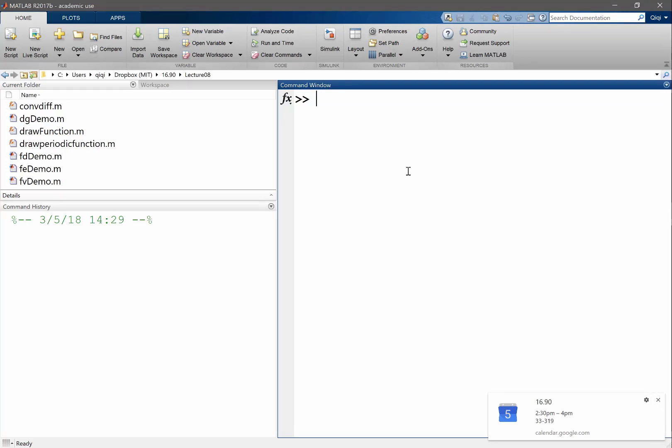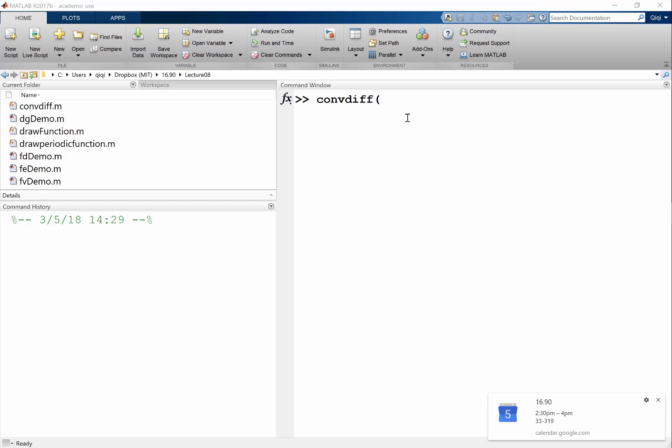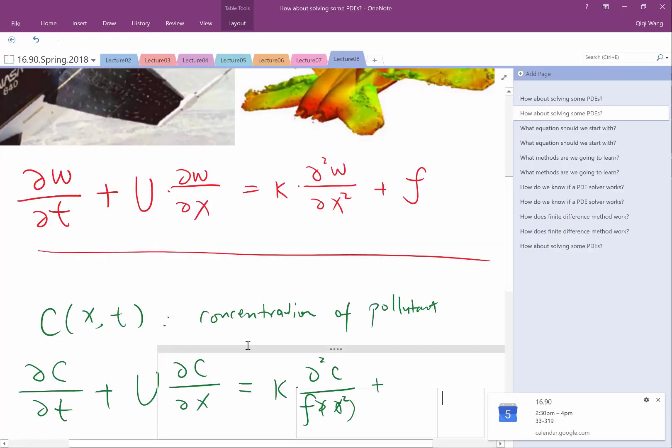So I'm going to go to MATLAB and there is a function I wrote called the convection-diffusion equation. And if I call it, it has two arguments. One argument is this U, the capital U, and another argument is this kappa.